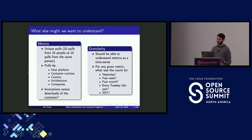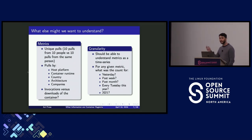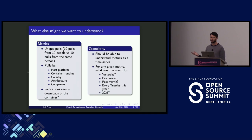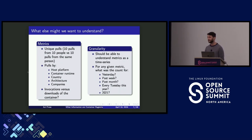Another interesting thing is that for those who don't know, any time a container is invoked, a container runtime is going to check with the registry if it has the latest version of the given tag that you are running. So you're only seeing pulls, but the registry is actually also seeing the HEAD requests on a manifest — the registry actually knows when the container is being invoked. That's another thing that you might want to know about.